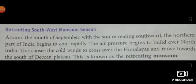Around the month of September, with the sun retreating southward, the northern part of India begins to cool rapidly. September में, जब sun south की तरफ move करता है, तब northern India के parts ठंडे होने शुरू हो जाते हैं — means, वहाँ temperature कम हो जाता है.